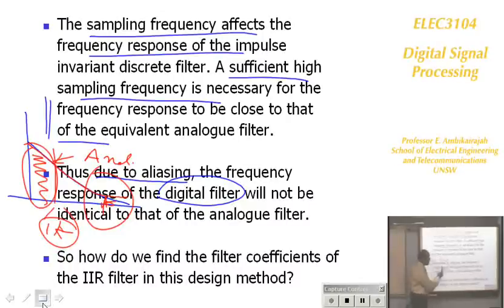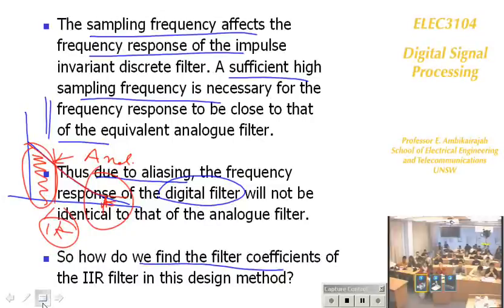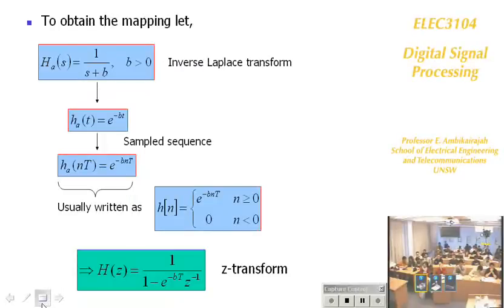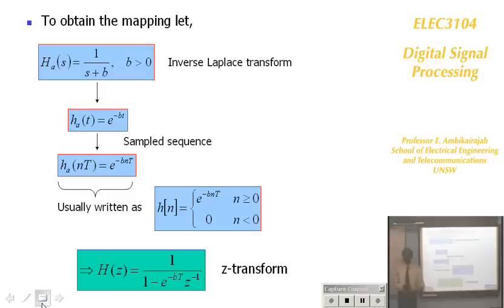Now, how do we find the filter coefficients of the IIR filter? At the end of the day, when you do design, you are trying to find filter coefficients. So far I gave you the coefficients and you manipulated them to draw the frequency response. Now you have been told what the frequency response is — find the filter with the appropriate coefficients. That's what is called digital filter design.